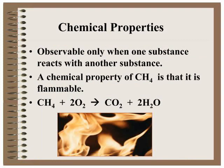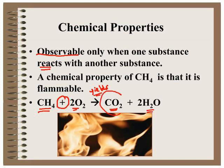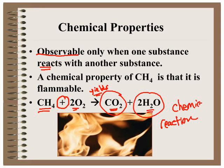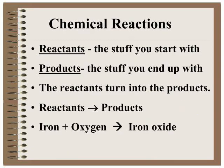Chemical properties and chemical changes are only observable when one substance reacts with another. The plus sign means 'reacts with' and the arrow means 'yields' or 'makes.' So methane CH4 reacts with oxygen to make carbon dioxide and water. Since the products have different formulas than the reactants, a chemical reaction — a chemical change — has occurred.